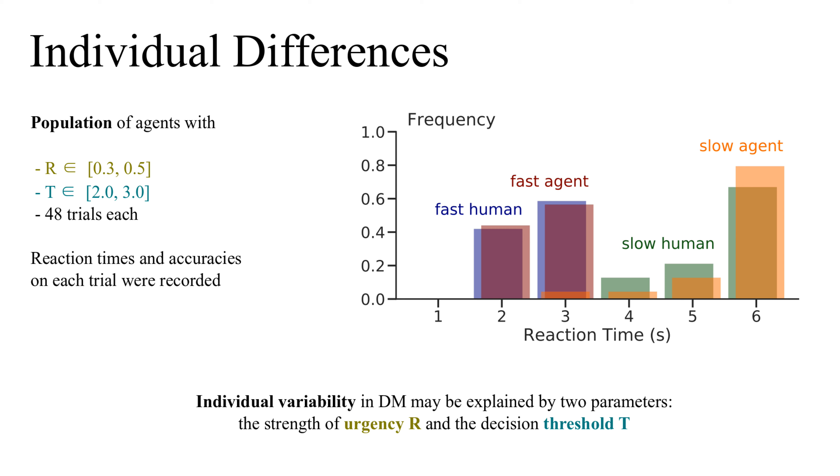For instance, a fast agent chose after 2-3 cues with low accuracy, whereas a slow agent chose after 5-6 cues with higher accuracy. This suggests that human behavioral variance may be explained by differences in urgency and threshold.